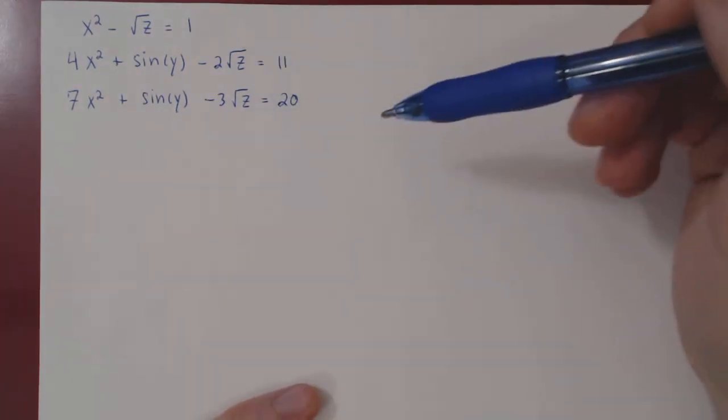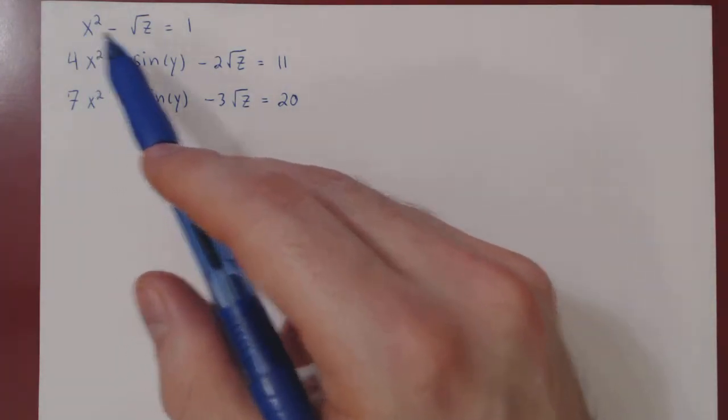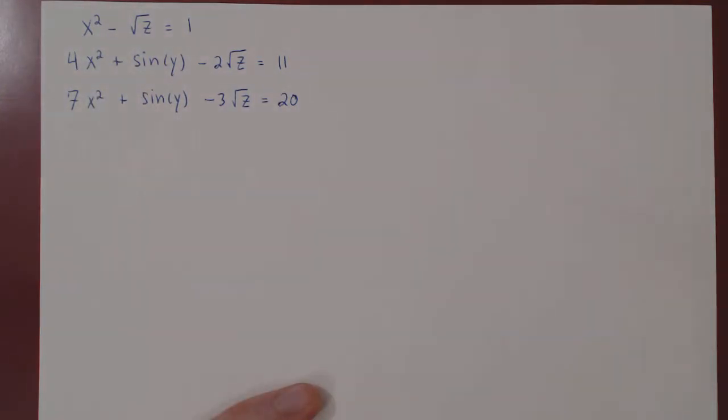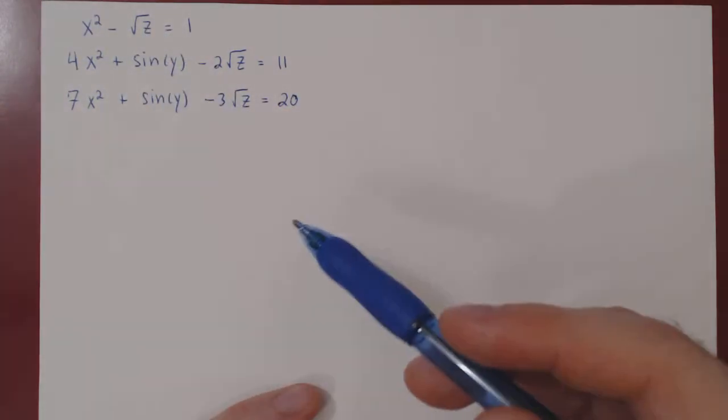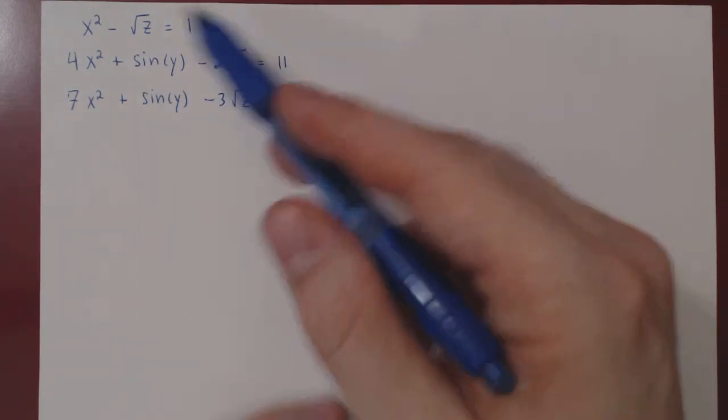Notice that this system is actually not linear. It is in the variables x, y, and z, but it's not just coefficients times the variables. We have x squared, root of z, sine of y. Can we still solve for x, y, and z even though the system is non-linear? Well, in this case, the answer is yes.